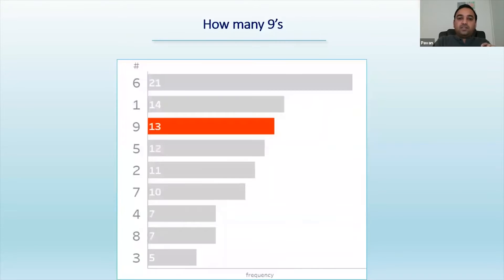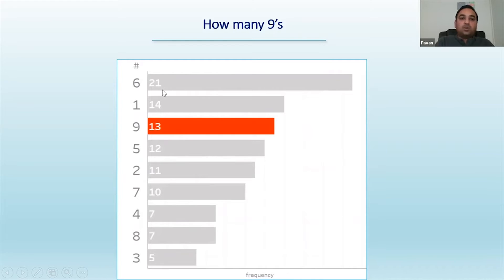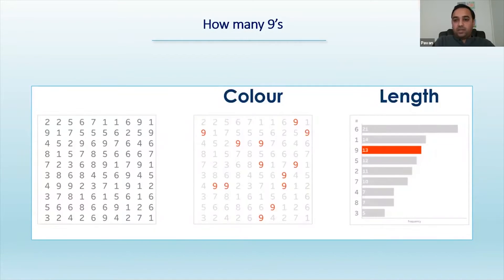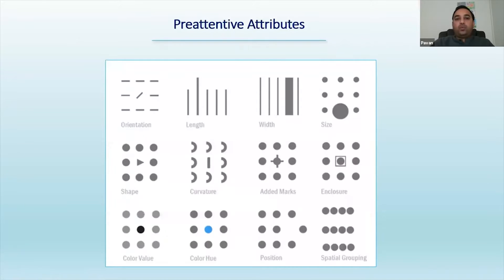There are many such preattentive attributes that your brain recognizes. For example, the chart showing this data tells you there are 13 nines in the data. It also tells you the relative frequency — you have only 13 nines, but number of sixes were more. And these bar lengths tell you, even without the numbers, that if 21 is at the top, the one that's about half would be around 13-15. So just by looking at the graph without the data, I can still conclude something. That's the preattentive attributes — color is one, length is another, and there are many more. We need to understand all preattentive attributes to build good data visualization dashboards.